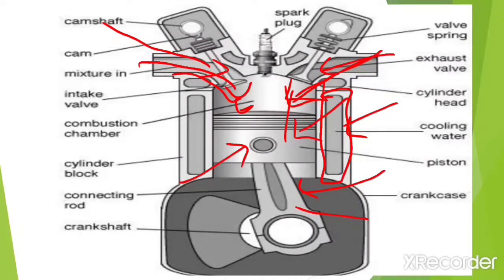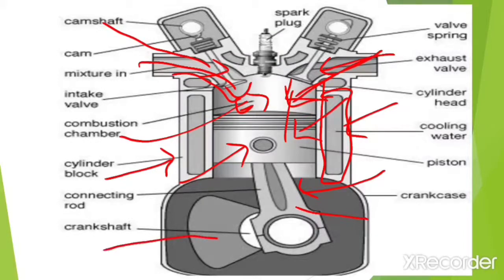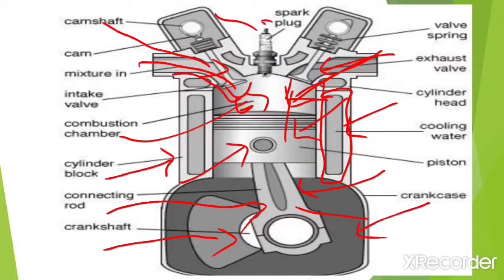Then this is the cylinder head. Here is the combustion chamber, and this is the crankshaft, then the connecting rod, and the crankcase, which supports the crankshaft. Another part shown here is the spark plug, which is actually present in petrol engines, so it is also called an SI engine.